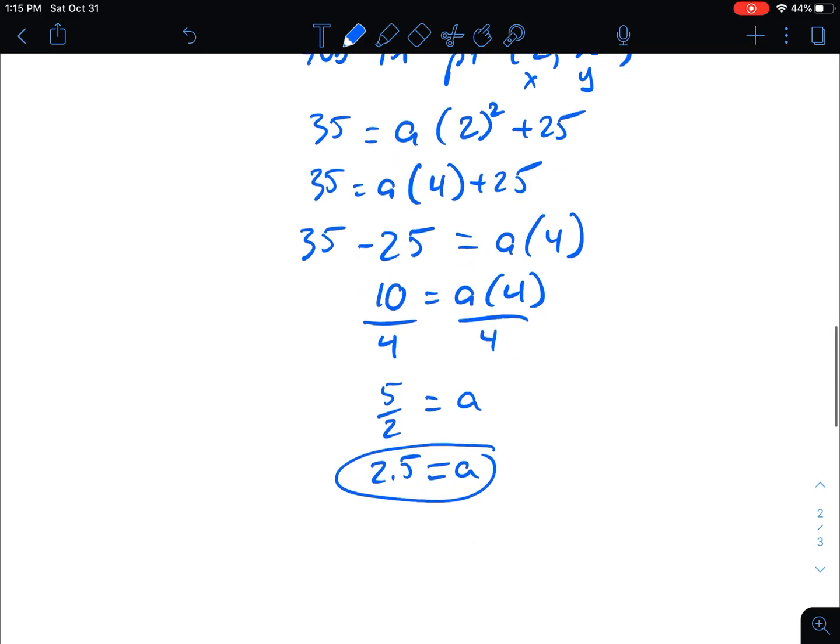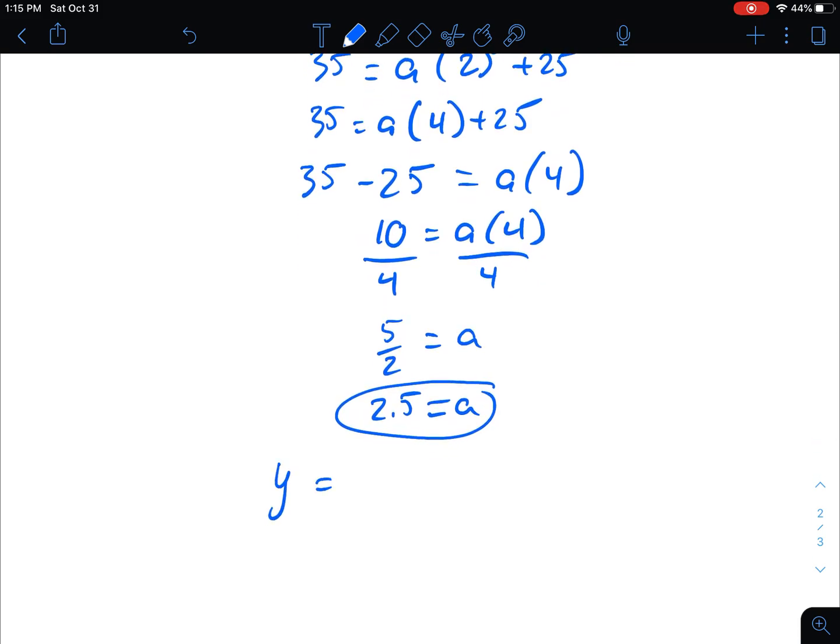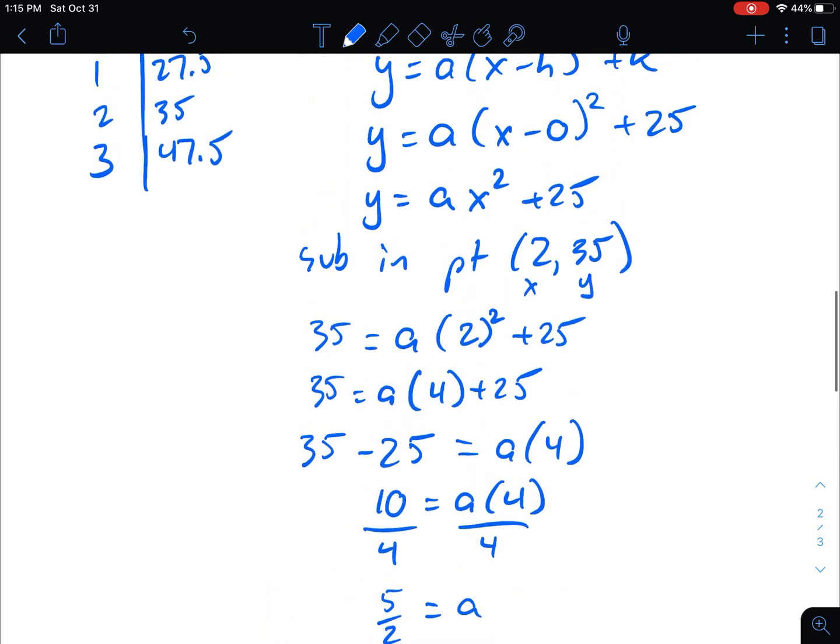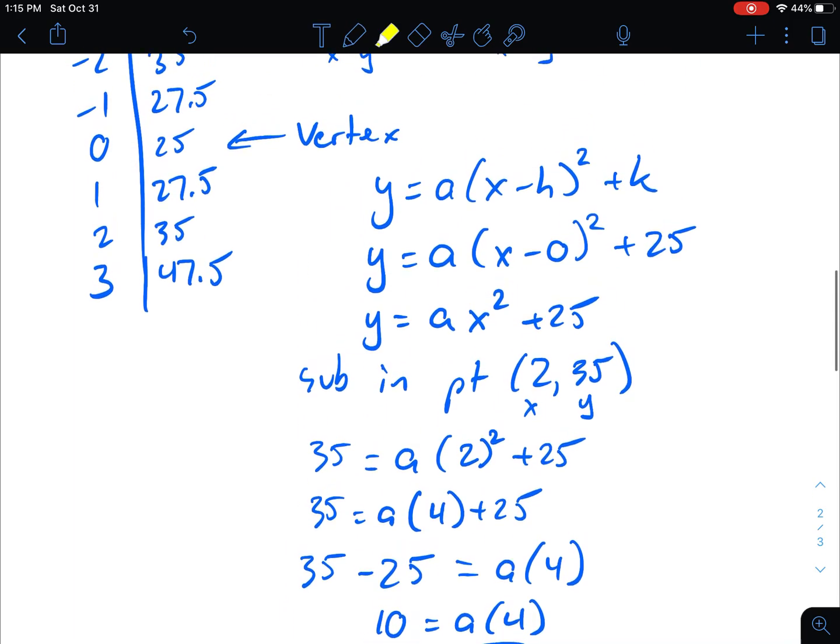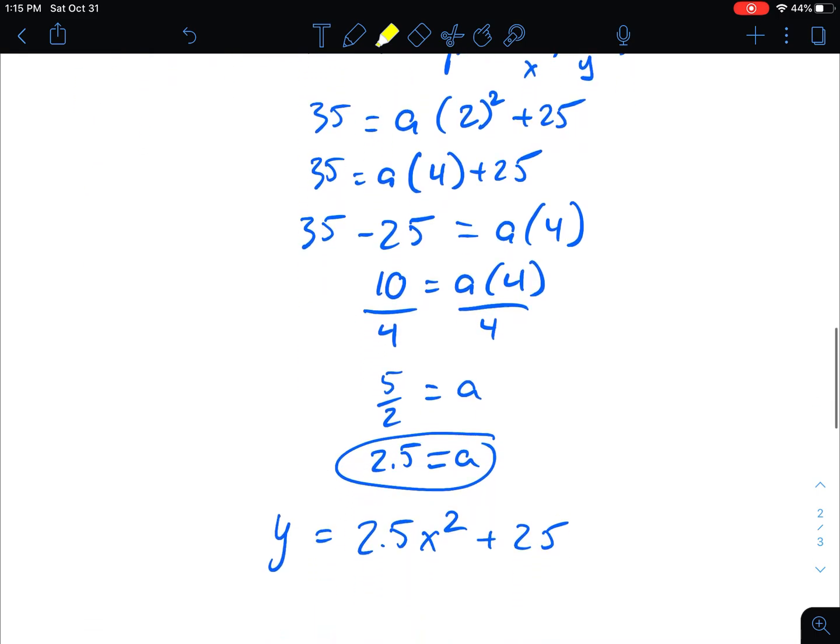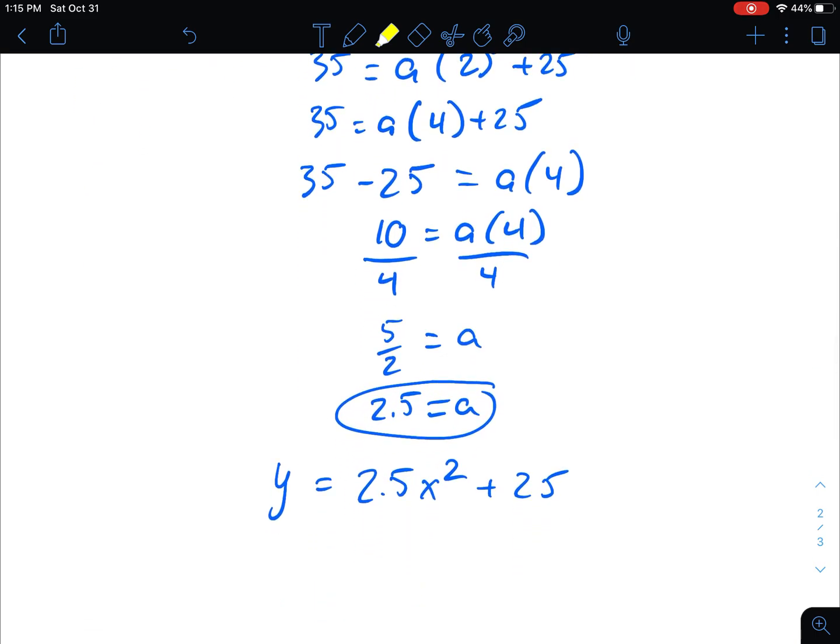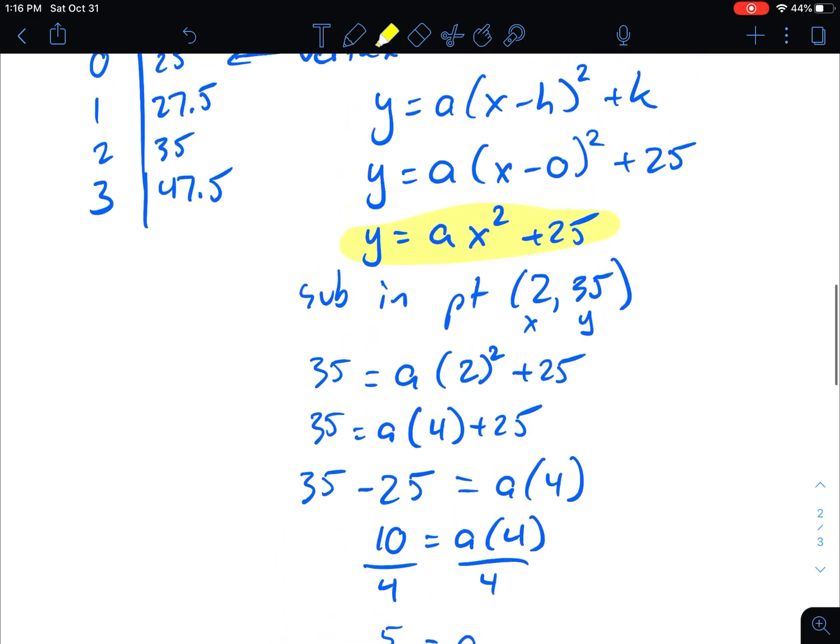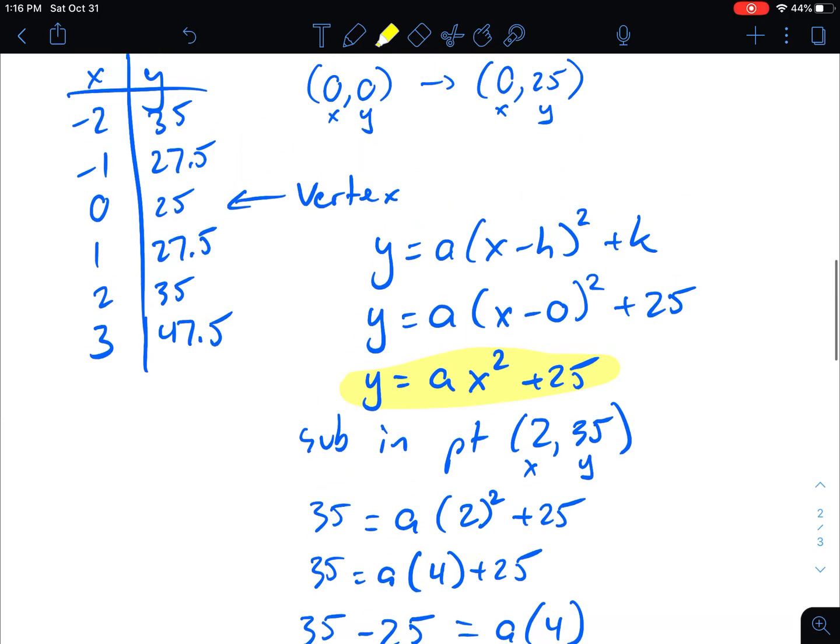So our actual equation then would be y equals, the a is 2.5, and then it's x squared plus 25. I'm basically just subbing it into this equation right here. That's our equation that was finished. We just didn't have the a in it. So that's it. That's our equation. And like I said, this will work for pretty much any table of values, as long as you're trying to get an equation of the form y equals a bracket x minus h squared plus k.